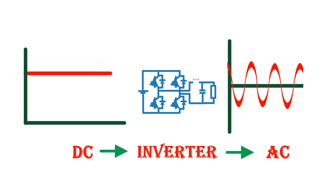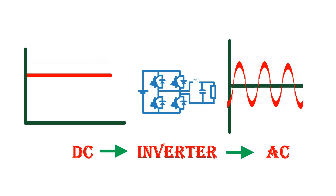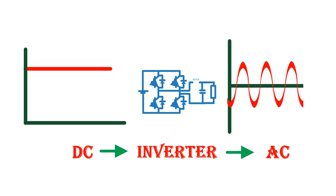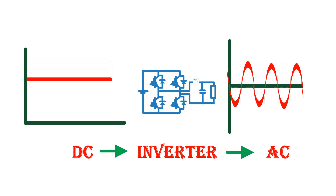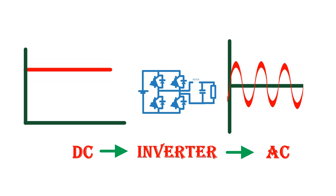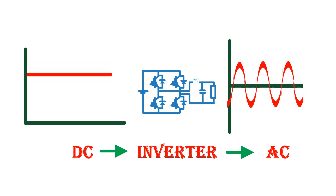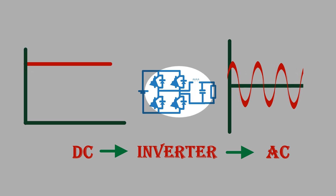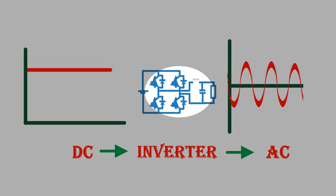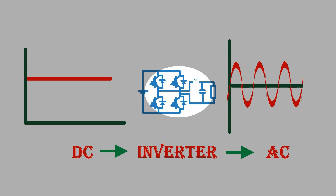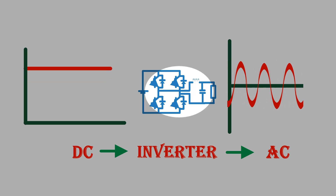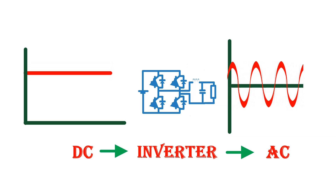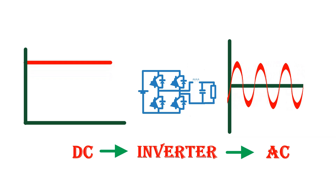An inverter is a device which converts DC into AC. Depending on the application, AC or DC values can be fixed or variable. An inverter consists of four switching devices like MOSFET or IGBT, and an inductor and capacitor for filtering out the high frequency component in the output voltage.